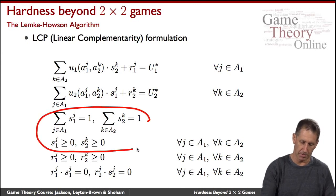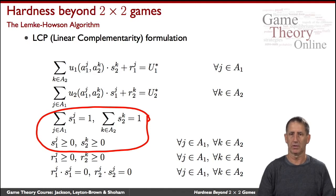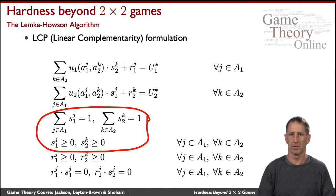We want the S's to be a probability distribution — so they sum to one, and they're all non-negative. This is our linear complementarity program.